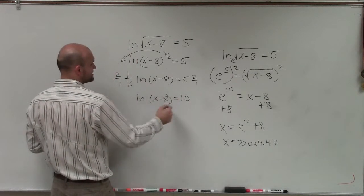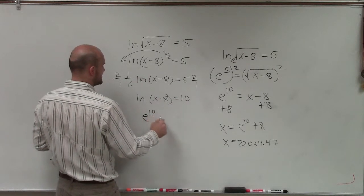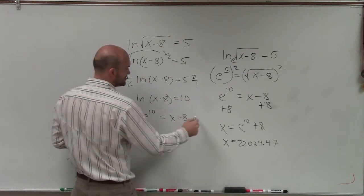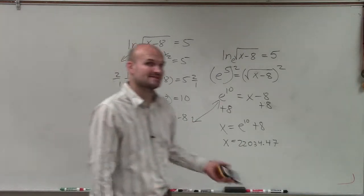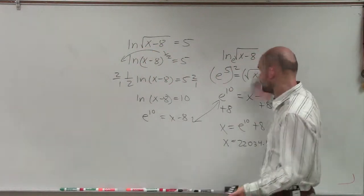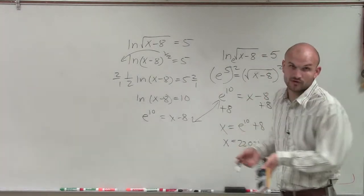And then again, by converting this to exponential form, you'd have e to the tenth equals x minus 8, which is the exact same thing we had over here. So that's a way of using your properties of logarithms. Or if you just prefer using your inverse operations, that would work as well.